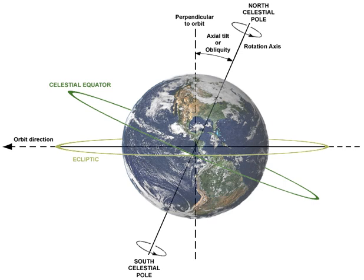The celestial equator is the great circle of the imaginary celestial sphere on the same plane as the equator of Earth.